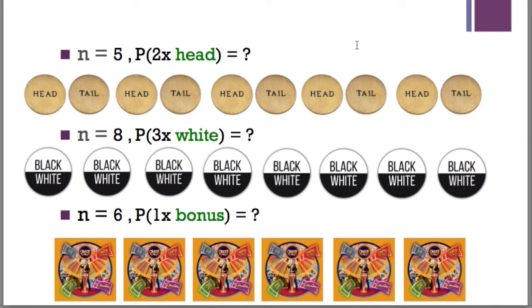What's the probability it will be twice head? Here N is eight, eight trials. What's the chance we will get three times white? Here the host will spin the crazy time wheel six times. What's the chance we will get one bonus game?